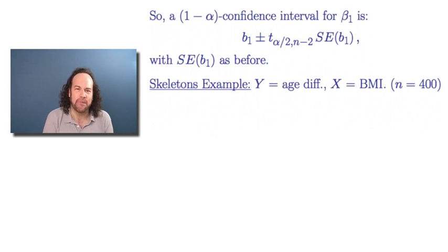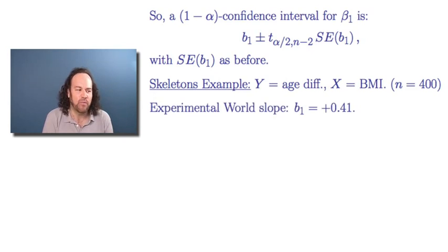So, now we can say, let's do that skeletons example again. So, that example of a regression that we had from the previous lecture. And there, remember, Y was the age differences, the difference of the estimated minus the actual age of the skeleton at death. And X was the BMI, the body mass index. And we had this data for 400 skeletons. And then we can say, in the experimental world or the data world, we computed a slope which was equal to B1, and it was plus 0.41.